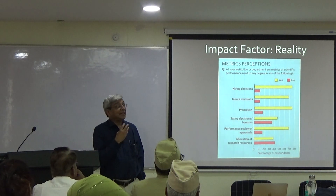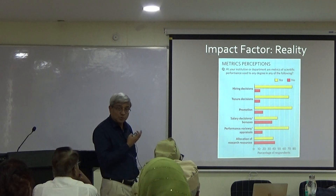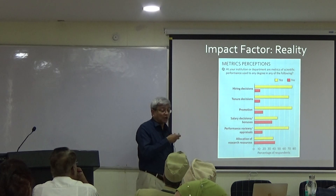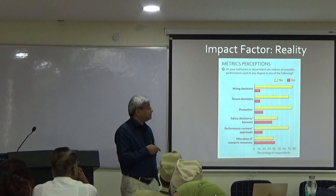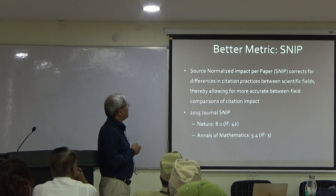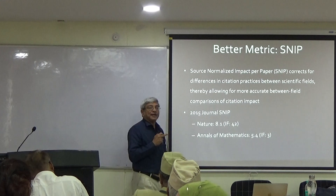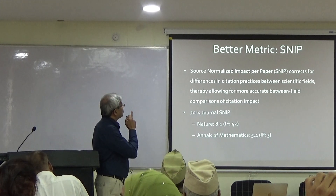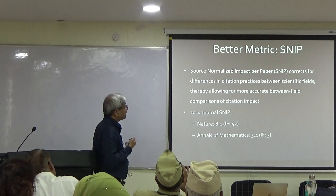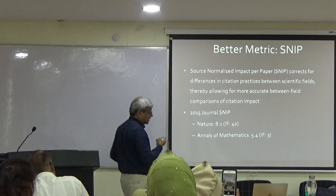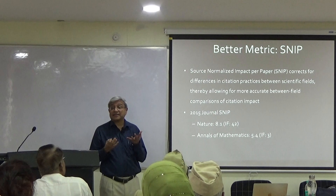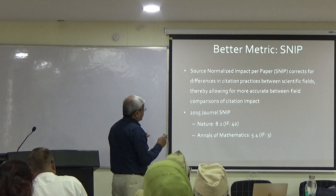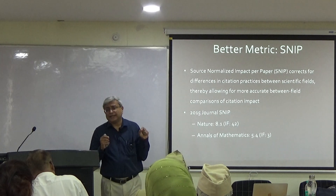Unfortunately, there is a reality — people use impact factor things even though they should not be used. The better metric, if you have to use the impact factor, is what is called the force normalized impact per paper, which corrects for differences in citation practices between different areas. This allows for better comparisons between different areas.